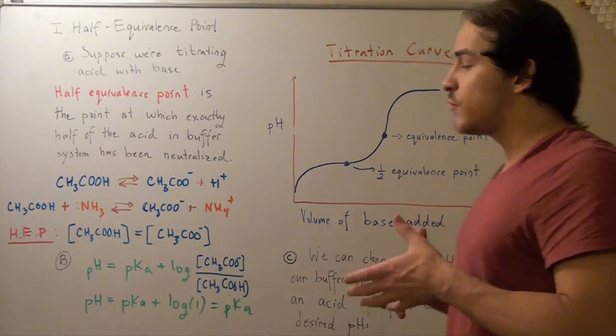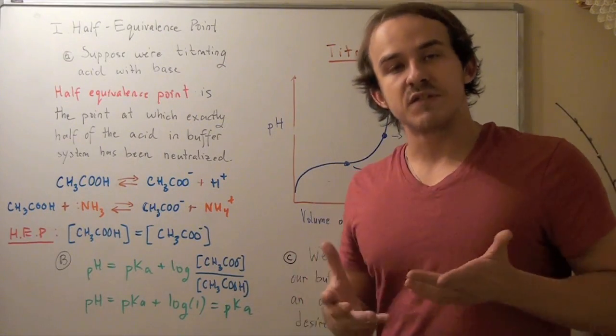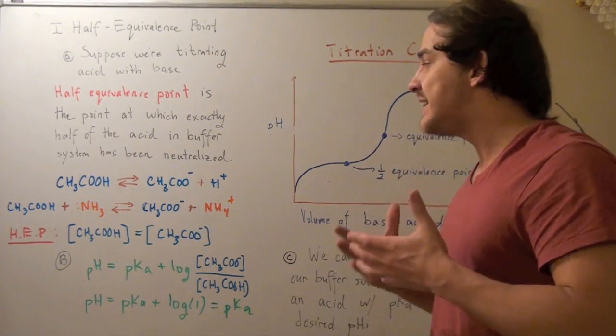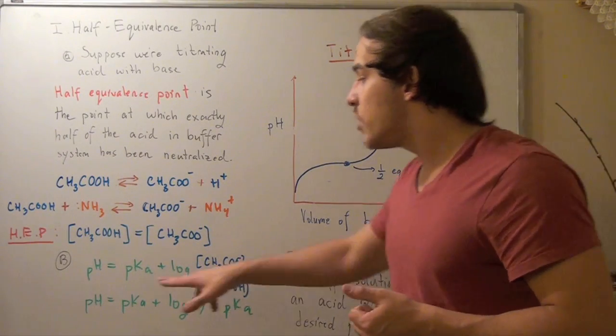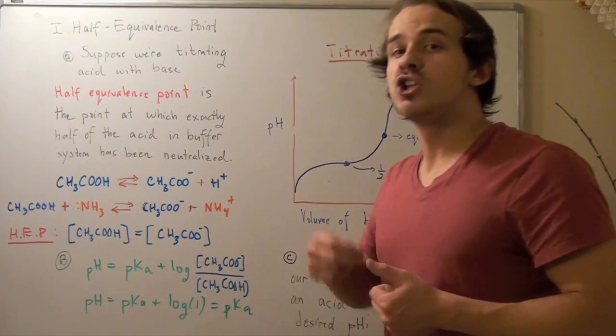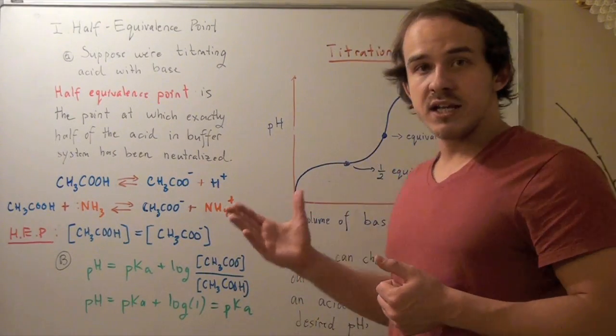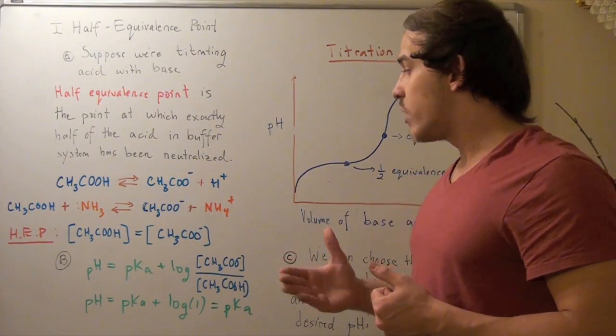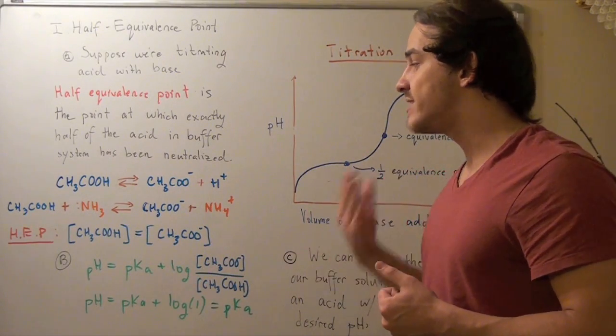So suppose, for example, I want my buffer system to have a pH of 4.7. Now, how I find the acid to use is I simply find the acid with the pKa value closest to 4.7. I go online, I find my table, I look up an acid with a pKa closest to a pH of 4.7, and I find that it's acetic acid.